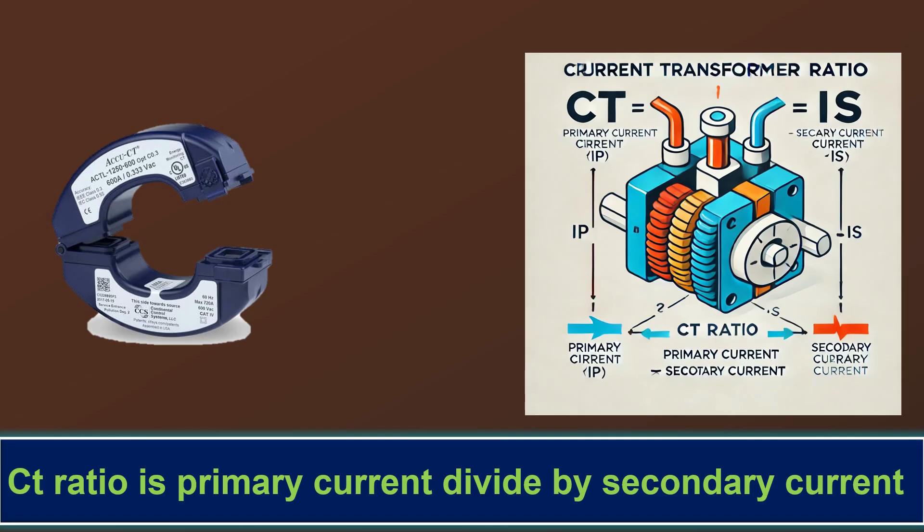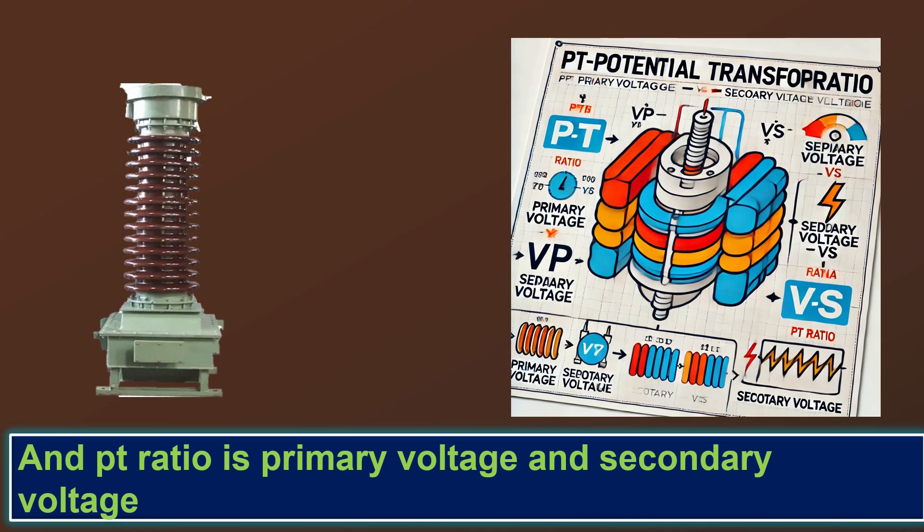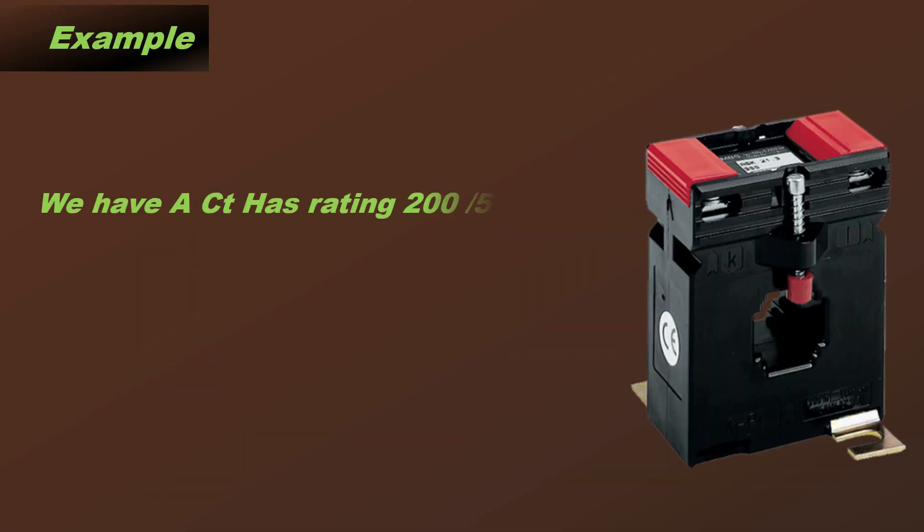For example, we have a current transformer with a rating of 200/5 and a PT with a rating of 11,000/110.